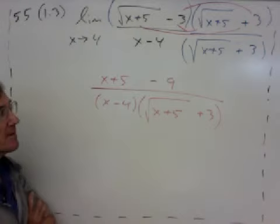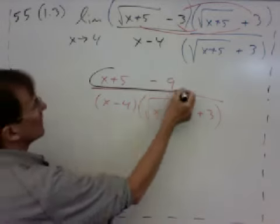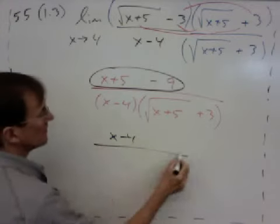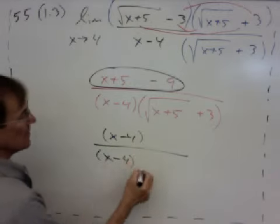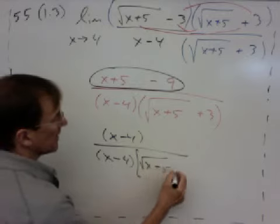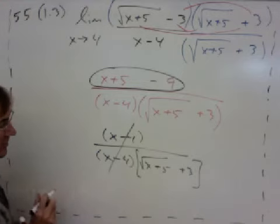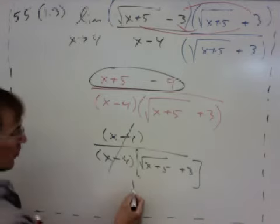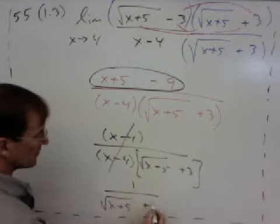So we're going to simplify the numerator. So that becomes x plus 5 minus 9 is x minus 4. The denominator is x minus 4 times this radical, x plus 5 plus 3. So the x minus 4 is going to cancel. And we're going to end up with just 1 over radical x plus 5 plus 3.